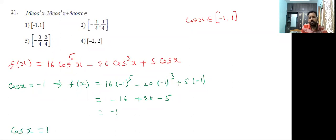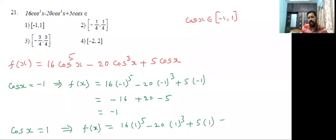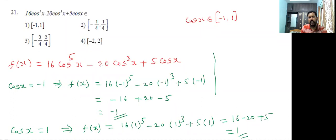If cos x value is 1, then f(x) = 16(1)⁵ - 20(1)³ + 5(1). Let's calculate: 16 - 20 + 5, that is totally 1. So the given function has minimum value -1 and maximum value 1.